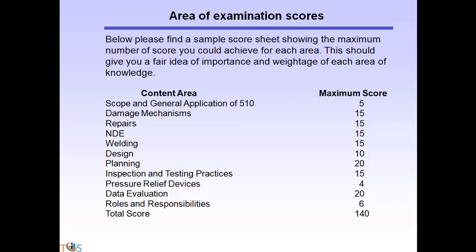The Area of Examination Score breakdown shows: 5 questions from scope and general application of API 510; 15 each from damage mechanisms, repairs, non-destructive examination, welding, and inspection and testing practices; 10 from design; 20 from planning; 4 from pressure relief valves; 20 from data evaluation; and 6 from rules and responsibilities — totaling 140 scored questions.